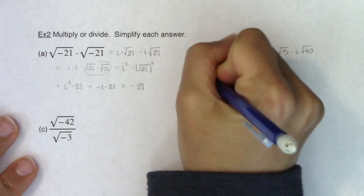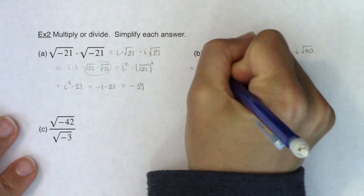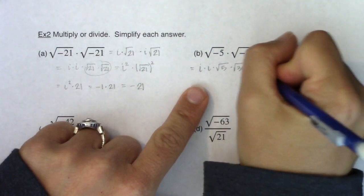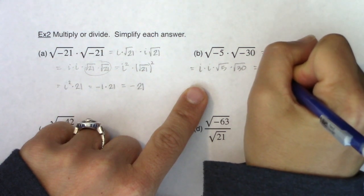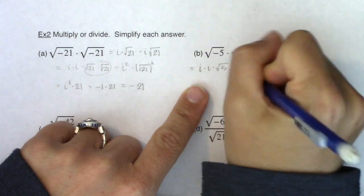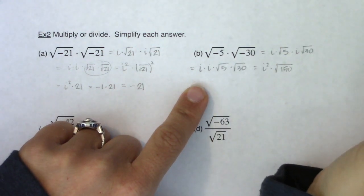So if I'm starting to work this, I can see I have i times i times the square root of 5 times the square root of 30. And I'm going to start grouping these. So this is going to be i squared and this is going to be the square root of 5 times 30 would be 150. Okay, fantastic.